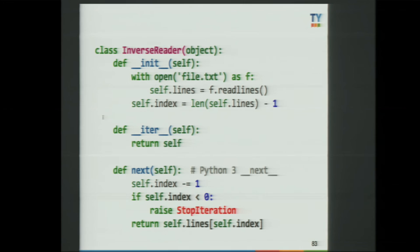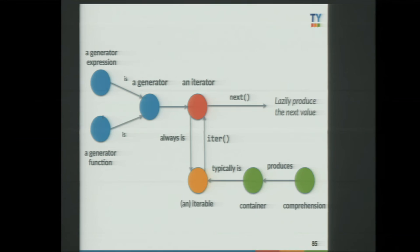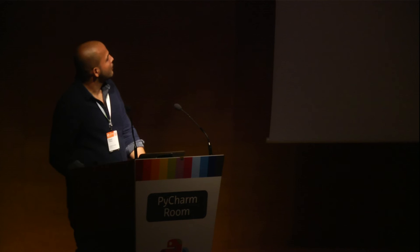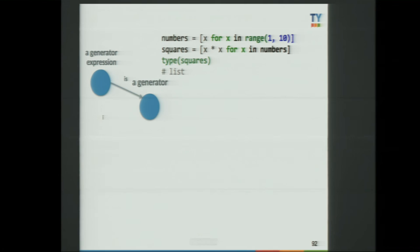How do I implement my own iterator? For pragmatic reasons, you can implement both the iterable and the iterator in one class. You have an __iter__ method that returns itself, and then you implement the __next__ method (in Python 3, it's a dunder method). In this example, it's code that reads a file and iterates in inverse order — starting from the last line up. When there are no more lines to return, it raises StopIteration, which is the exception that stops the for loop.